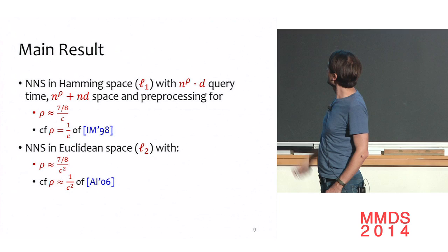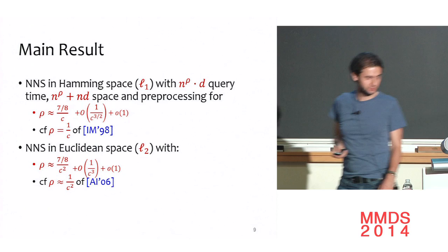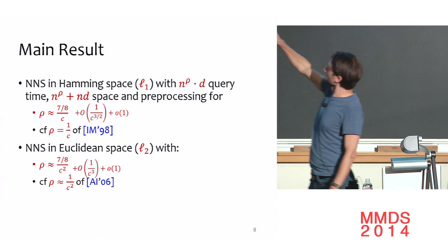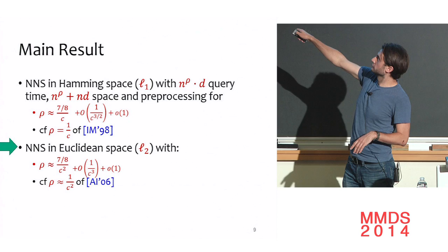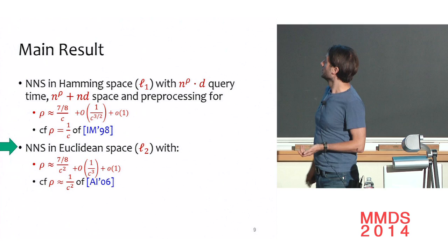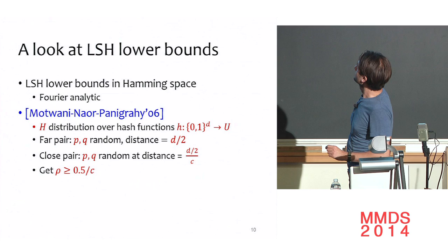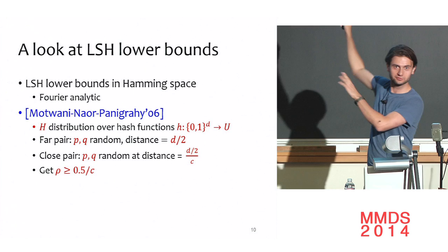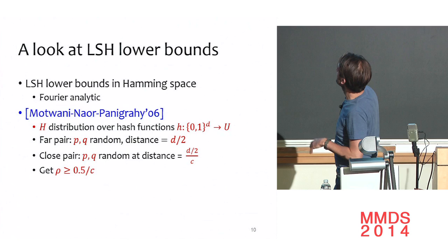This work improves both on Indyk-Motwani and on a 2006 paper with Piotr Indyk. There are additional terms, but you should remember the bound as going beyond the 1/C barrier. I'll try to give a sketch of the algorithm idea — why can we go below the lower bound? I'll focus on nearest neighbor search in Euclidean space.